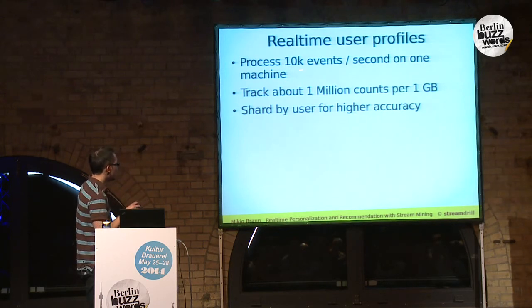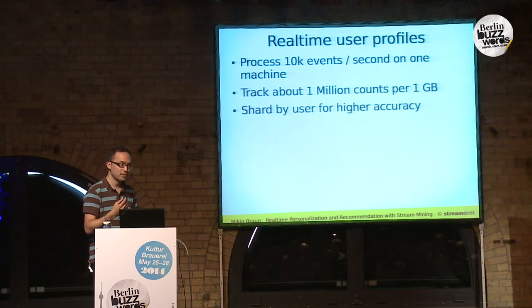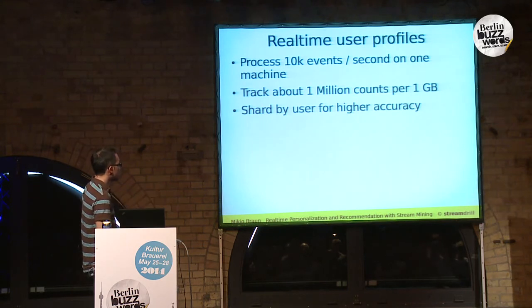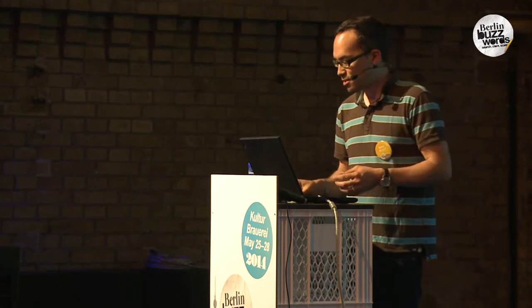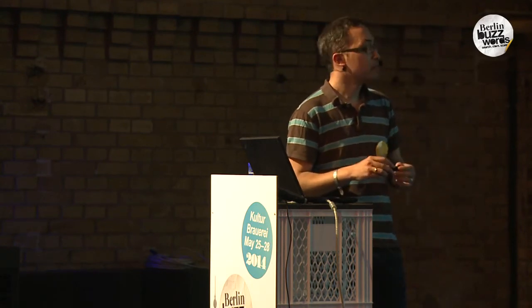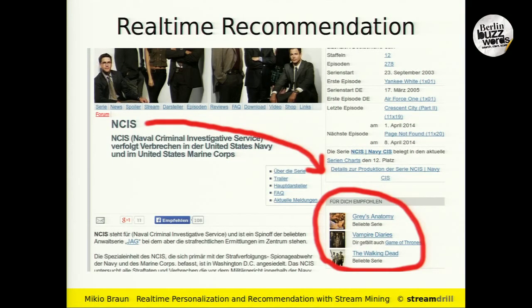You could even shard this very easily by users, but it hasn't been necessary so far. With 16 gigabytes of RAM you can track about 12 million individual counts, which gives you a lot of information about the most active users — those you want to engage with. Instead of stitching together different infrastructure parts, a single machine without distribution or networking overhead can process a serious amount of data.